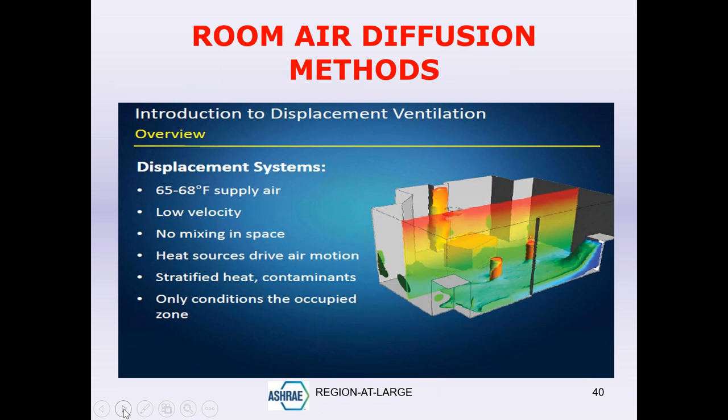In a displacement ventilation system, recall the three characteristics of a mixing air system: in mixing, primary air is supplied far away from the occupied zone. In displacement, the primary air is supplied directly into the occupied zone — units are installed within the occupied zone itself, not overhead or on a far sidewall. And since the outlets are located within the occupied space, the supply air temperature must be higher, typically between 68 to 70°F, rather than the 55°F used in a mixing system.